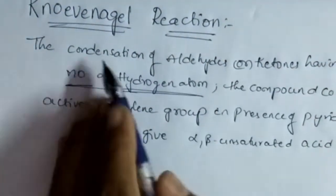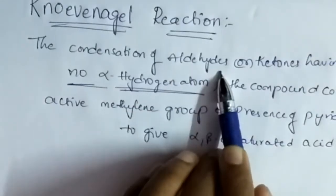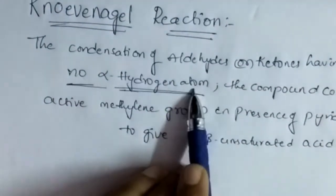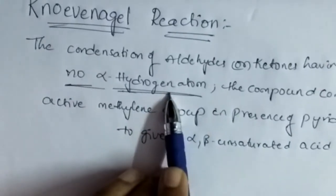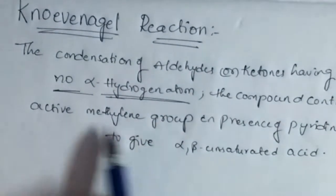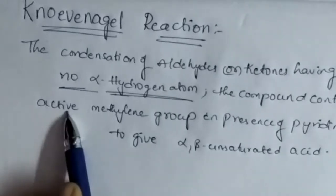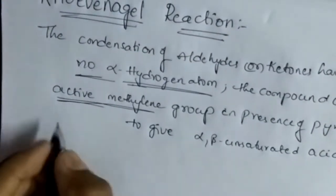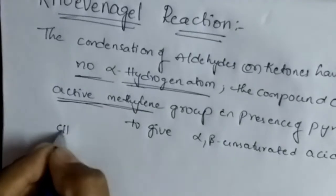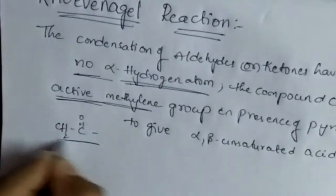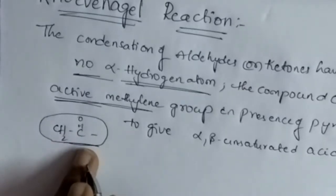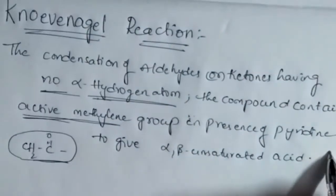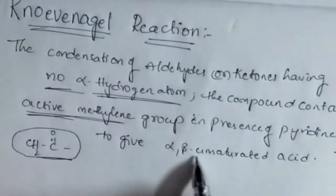So this is the definition of the Knoevenagel reaction: the condensation of aldehydes or ketones having no alpha hydrogen atom. The compound containing active methylene group — here the active methylene group means CH₂ with a C=O group — in the presence of pyridine, to give the alpha-beta-unsaturated carboxylic acid.